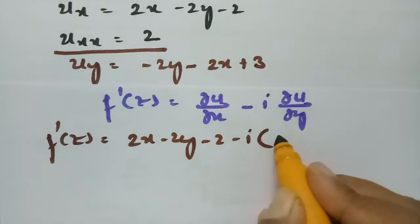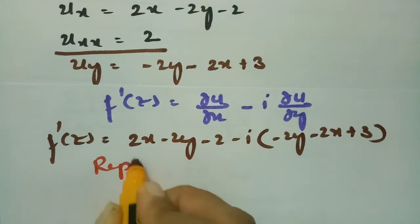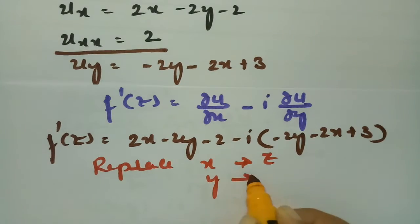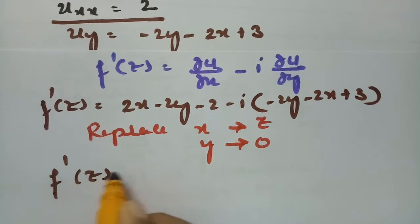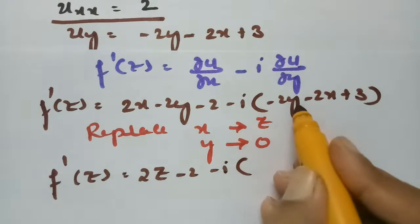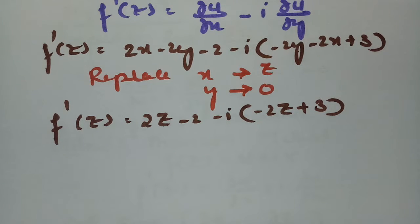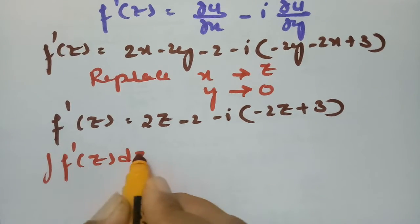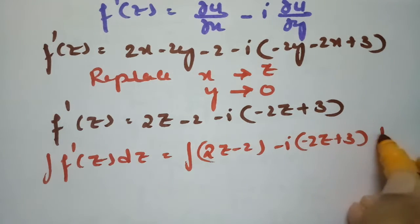So ∂u/∂y = -2y - 2x + 3. According to the Milne-Thomson method, we replace x by z and y by 0. Then f'(z) = (2z - 2) - i(-2z + 3). Setting up the integral: ∫f'(z)dz = ∫(2z - 2 - i(-2z + 3))dz.